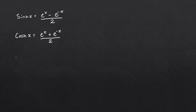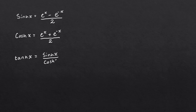And for hyperbolic tan of x, this is just using the identity that tanh x equals sinh x over cosh x. You can actually differentiate hyperbolic tan just by using identities. But for now, let's start with hyperbolic sine and hyperbolic cosine. So let's start by differentiating e to the x minus e to the minus x over 2.